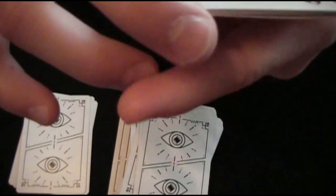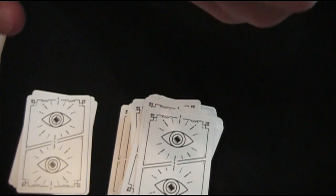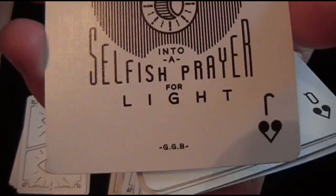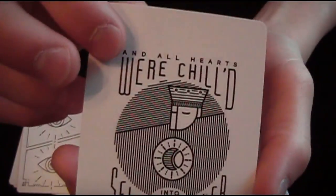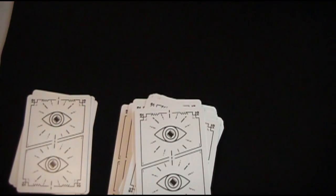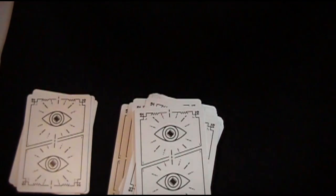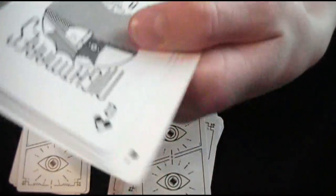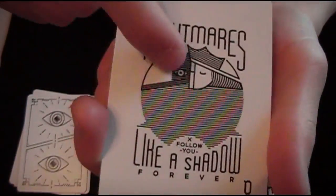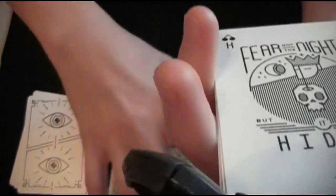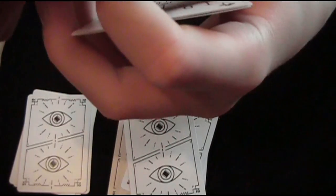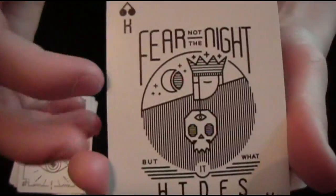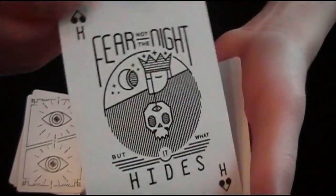Now here on the jack of spades it says, And all hearts were chilled into a selfish prayer for light. And it says GGB on the bottom. The queen of spades says, AH, and it says, Nightmares follow you like a shadow forever. There's like a little shadow guy there. And the king of spades says, Fear not the night, but what it hides. Which is another sort of profound saying.